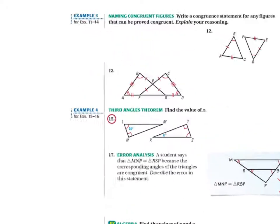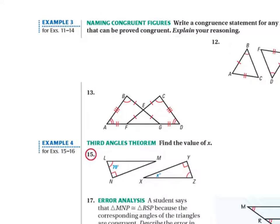Now for number 13, we can prove that these two triangles are congruent. If I zoom in here, the two triangles that we're going to refer to is triangle B-A-G and the other triangle is going to be triangle C-D-F.